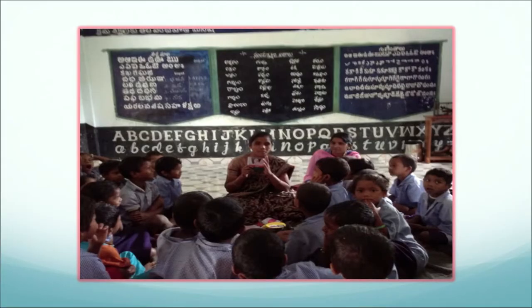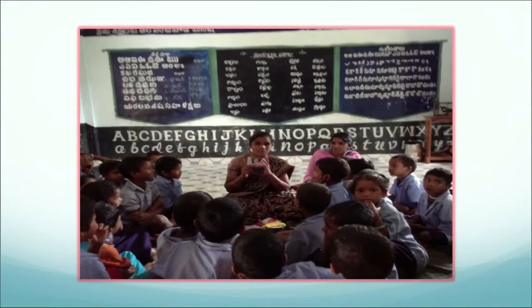Look at this — here is a part of the country where there are not one but three or four languages. What the school has done is learn four or five words in each language to make the child feel comfortable. If you slip in one or two words, the child feels at ease. At the back, you can see three charts of alphabets, giving recognition to the child's language. The child feels, 'I also am important.' That is how diversity and differences become very significant in understanding what it does to children.